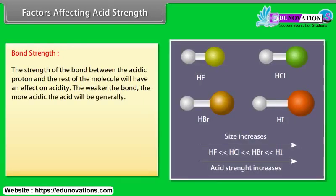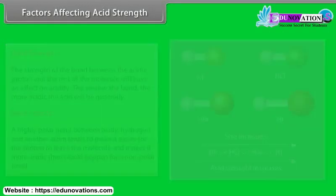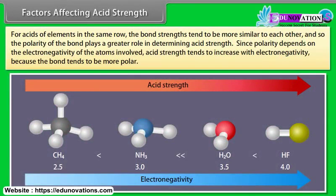Factors affecting acid strength. Bond strength: the weaker the bond between the acidic proton and the rest of the molecule, the more acidic the acid will be. Bond polarity: a highly polar bond between acidic hydrogen and another atom makes it easier for the proton to leave, making it more acidic. For acids of elements in the same row, bond polarity plays a greater role. Since polarity depends on electronegativity, acid strength tends to increase with electronegativity.